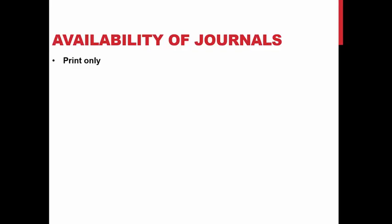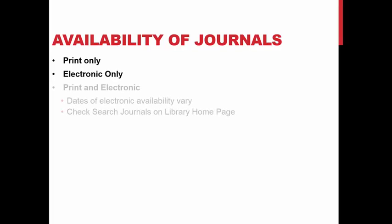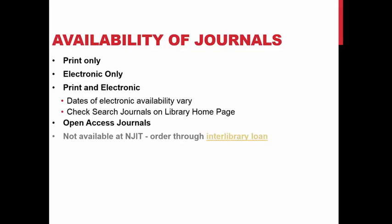Regarding availability of journals: we don't get very many print journals any longer, but sometimes older journals are available only in print. Now everything is available electronically, but sometimes there's a cutoff date — after a certain date it's available electronically, and before that date it's only available in print. We also have an interlibrary loan service. If you ever need a book or a periodical article that's not available through NJIT, you can order it through interlibrary loan.